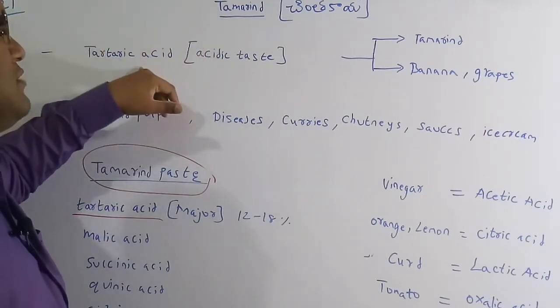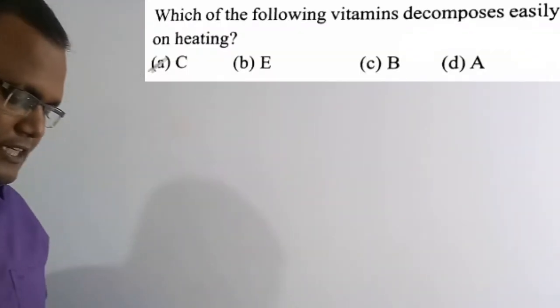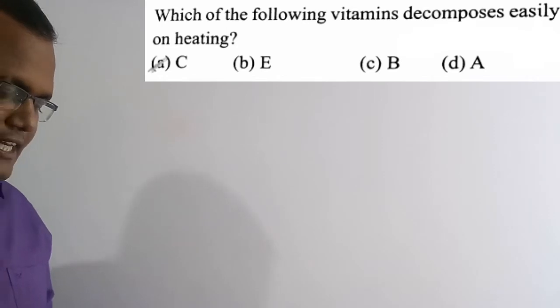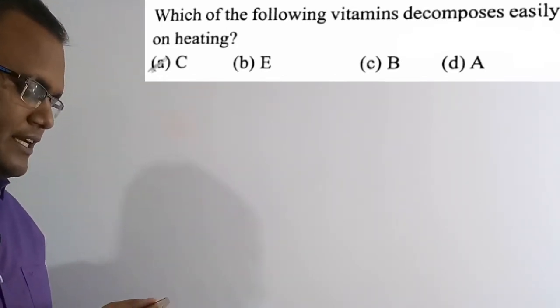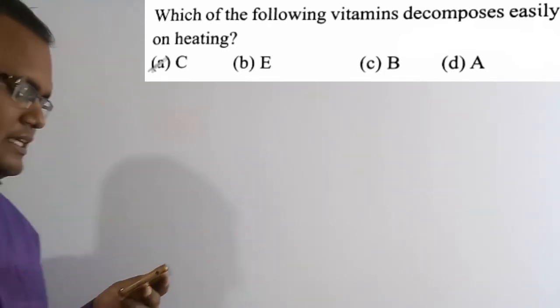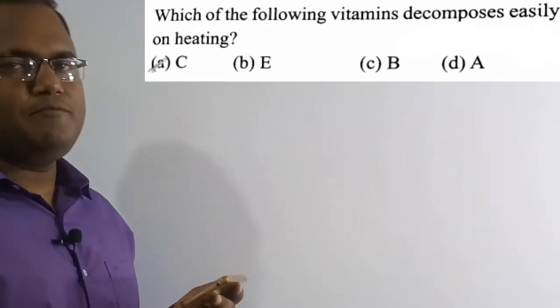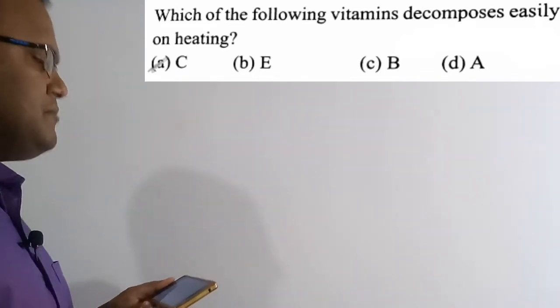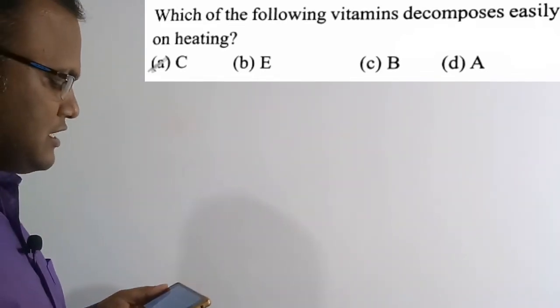Now we are going to solve the 22nd question. Which of the following vitamins decomposes easily on heating? Option A: Vitamin C. Option B: Vitamin E. Option C: Vitamin B. Option D: Vitamin A. The correct answer is option A — Vitamin C.